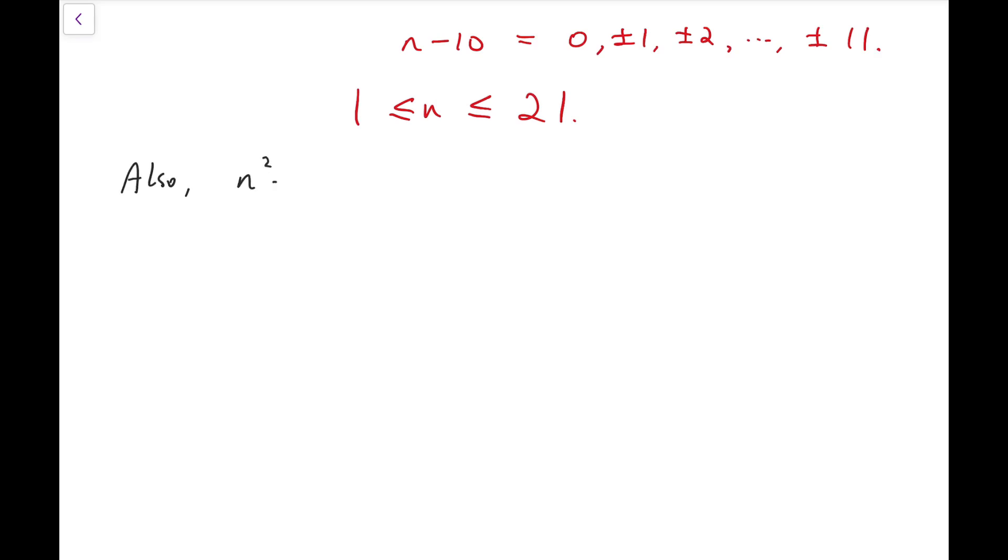Moreover, also, n squared minus 10n minus 22 must be non-negative, because it's, in nature, products of digits. And those digits are non-negative integers, and so the product must also be non-negative. Now if I solve this inequality instead, I will see that n minus 5 is at least 7, so that means n is at least 12.